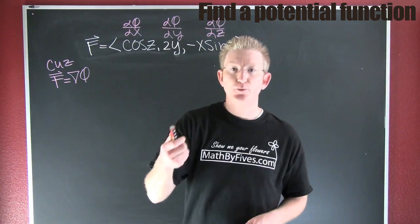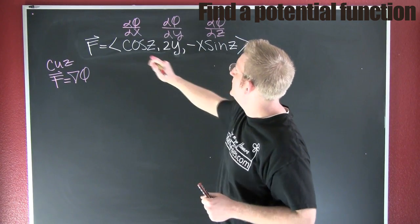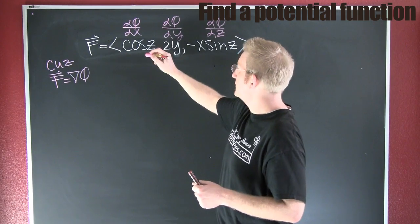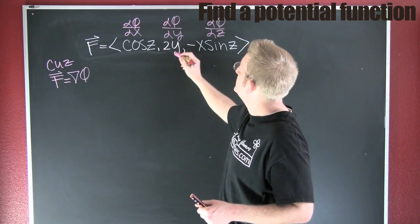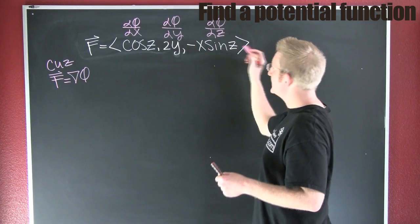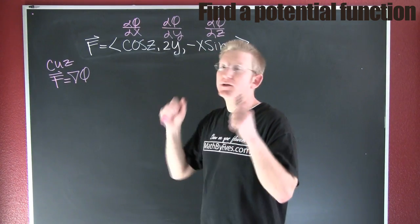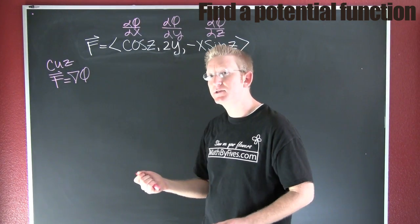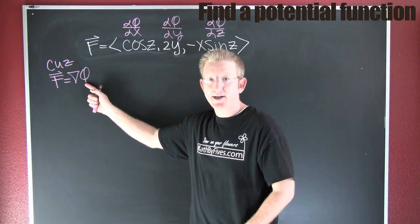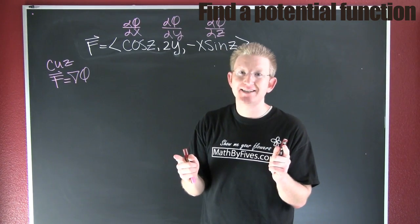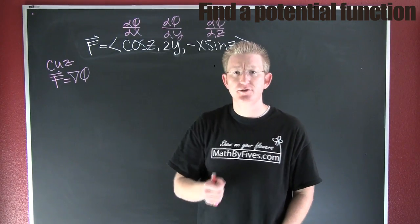In the last example, we showed that the field F — which consisted of cosine(z), 2y, and minus x·sine(z) — was conservative. Because it was conservative, we got that it was a gradient field. Now that we have it as a gradient field, let's go find that potential function.